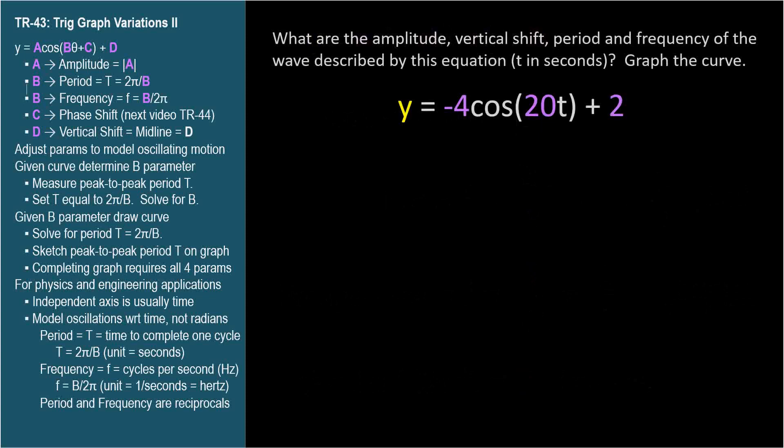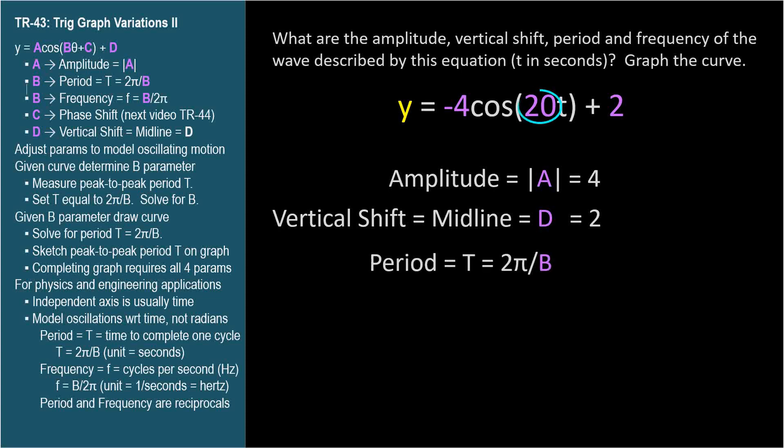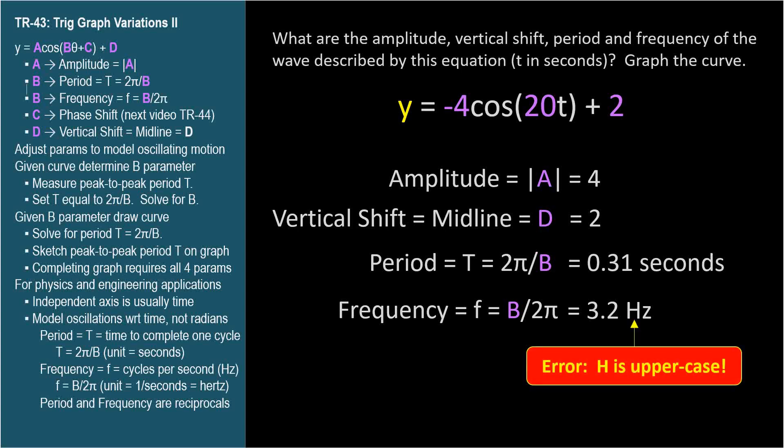One more problem, and we'll end this video. What are the amplitude, vertical shift, period, and frequency of the wave described by this equation, where T is in seconds. Graph the curve. Amplitude is the absolute value of a, which is 4. The vertical shift is the d parameter, positive 2. The b parameter is 20. The period is 2 pi over 20, which is 0.31 seconds, rounded to two significant figures. And the frequency is 20 over 2 pi, which is 3.2 cycles per second, or 3.2 hertz. Lowercase hz is the abbreviation for hertz.